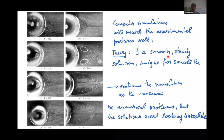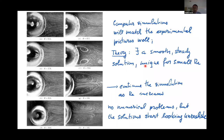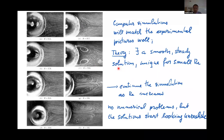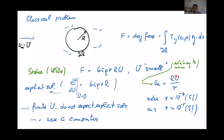We can put things on a computer and do a simulation. A good thing here is that we have a reasonable theory: when u is small, there exists a smooth steady-state solution which is unique. It's important to know that the target of our calculation is a smooth object — a smooth function which we want to calculate. On the left are experimental pictures.